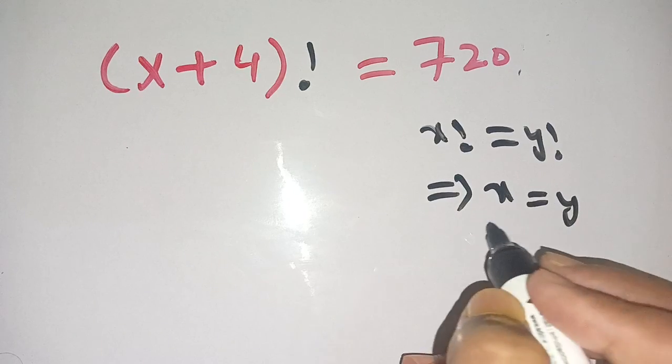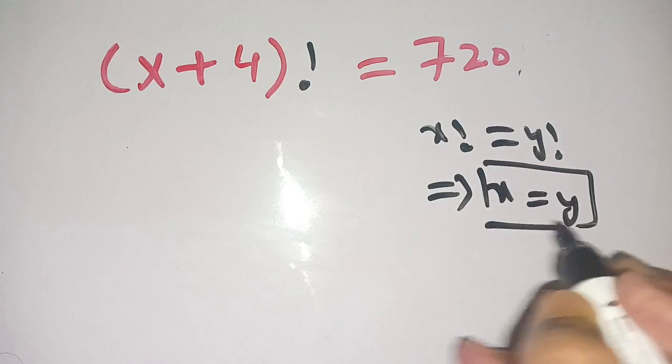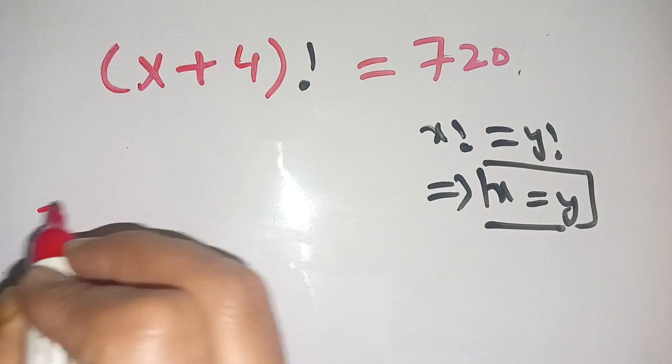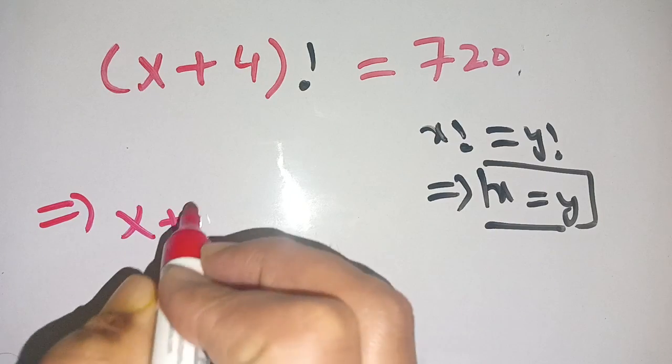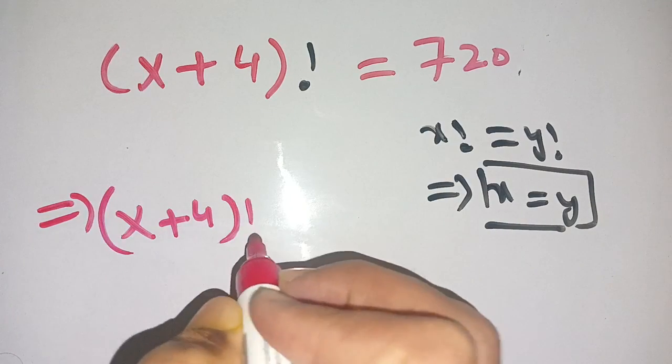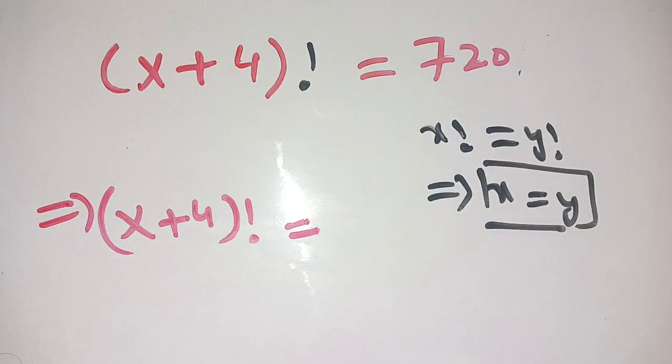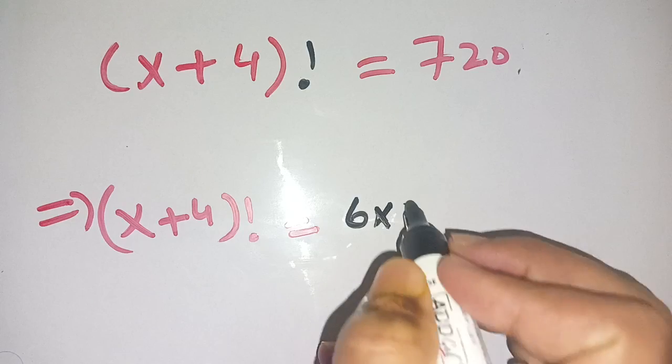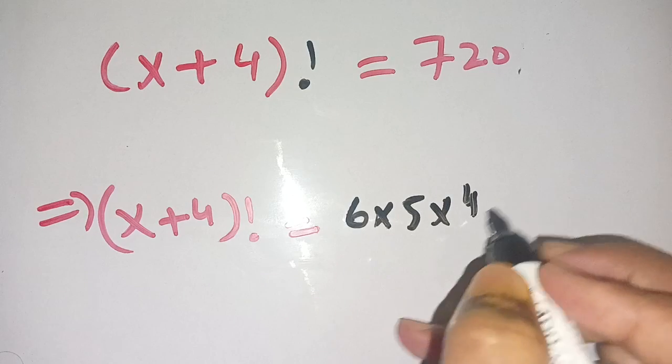From this identity, we get x is equal to y. Now, on solving this, we get (x+4)! as it is, is equal to 720. On factorizing 720, it is 6 times 5 times 4 times 3 times 2 times 1.